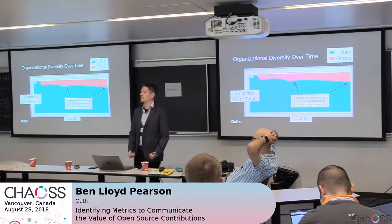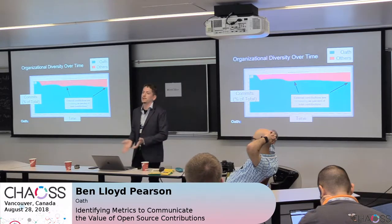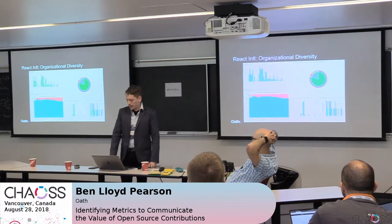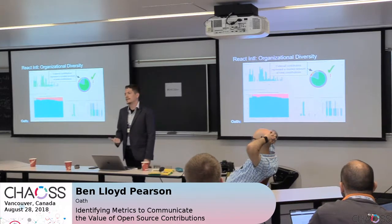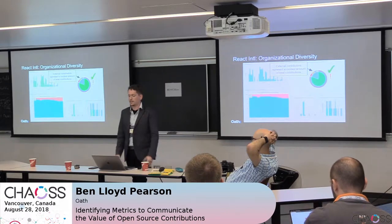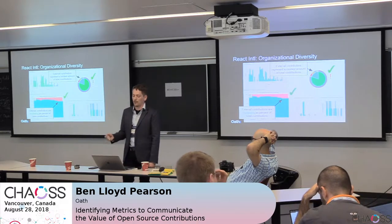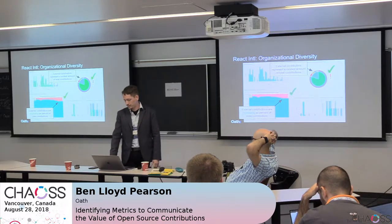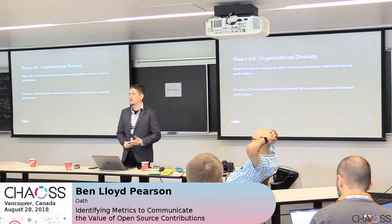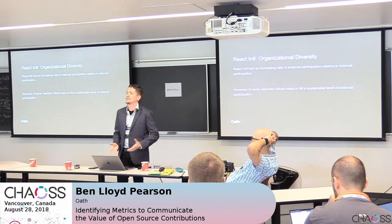As a percentile total over time for Project Purple, those external contributions are increasing. So when you're launching a project with the goal of creating an external community, this is a great chart to see, because it means you're getting more and more contributions from outside the company. For React Intel, the external contributions are a modest portion of total contributions. There's definitely room for improvement, but there are external people getting involved, which is great. More importantly, those external contributions are increasing as a percentile total. React Intel had an increasing rate of participation relative to internal participation; however, that external participation never reached any sort of critical mass for it to be sustainable long term.